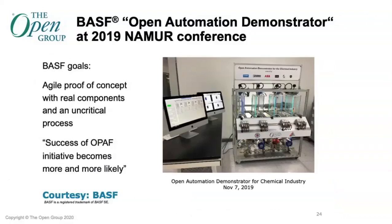The next example shows an open automation demonstrator concept system that BASF built for a non-critical use case — they used water, with pumps to heat up the water, move it around, control fill levels, and pump it back. They built a proof of concept to demonstrate both open process automation principles and MTP principles. It was built of heterogeneous components and shown at the NAMUR conference in 2019. BASF declared that the success of the initiative becomes more and more likely.